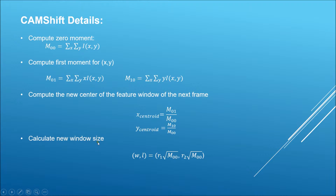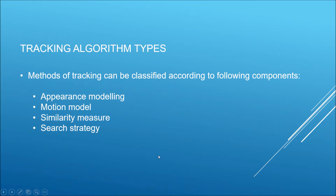Lastly, we calculate the new window size for each frame, where W and L are the width and length of the window, calculated as the square root of the zeroth moment M00 multiplied by a factor that varies frame to frame — making it an adaptive calculation.